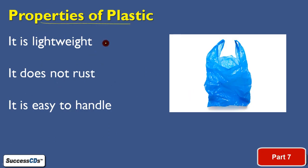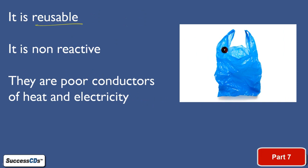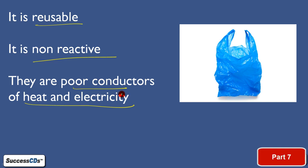Moving on to the properties of plastic: it is lightweight, does not rust, and is easy to handle. These properties you have already seen with a polythene bag. It is also reusable — you can use a polythene bag again and again until it tears. It is non-reactive — it does not react with things. It is a poor conductor of heat and electricity — it neither conducts current nor heat.